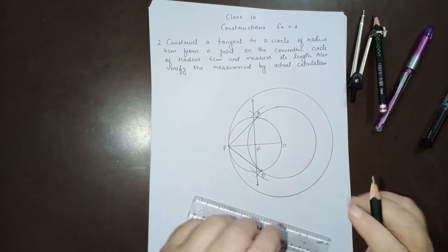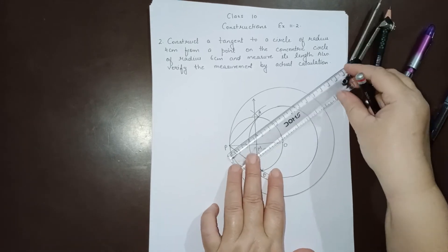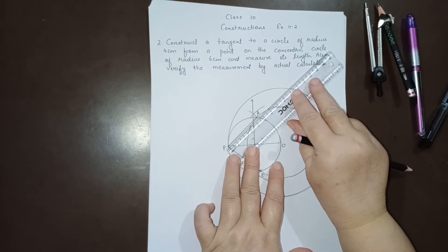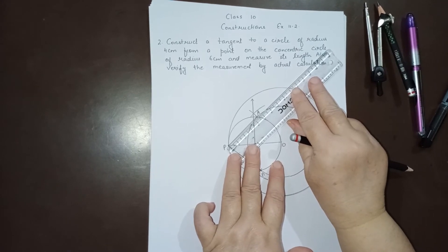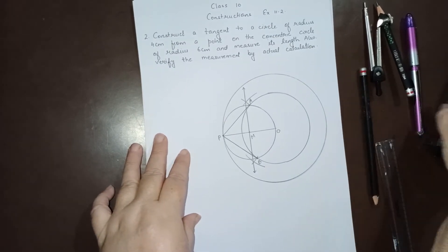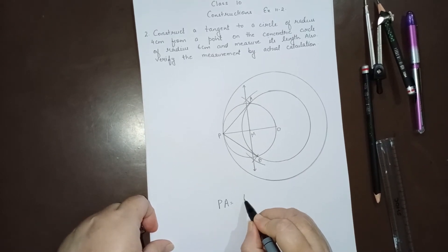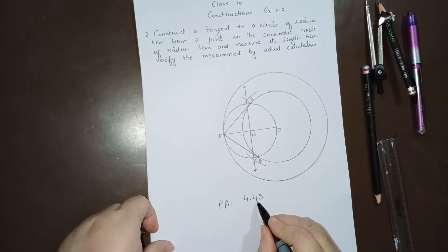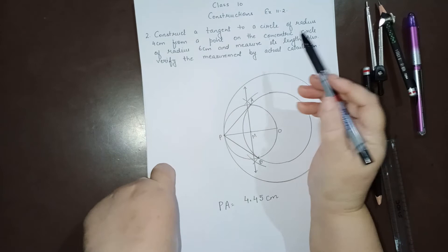This completes the construction. Now they say to measure the length of PA. When you measure it, you will get it approximately equal to 4.4 or 4.5 centimeters — somewhere in between. So we write the approximate value as 4.45 centimeters.